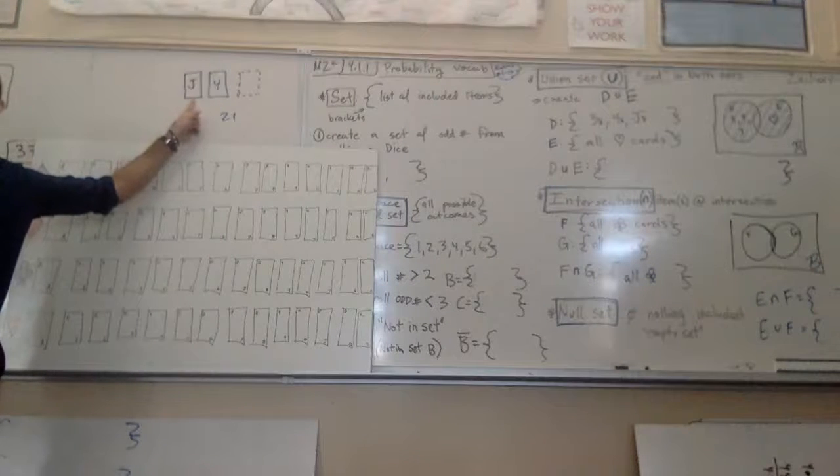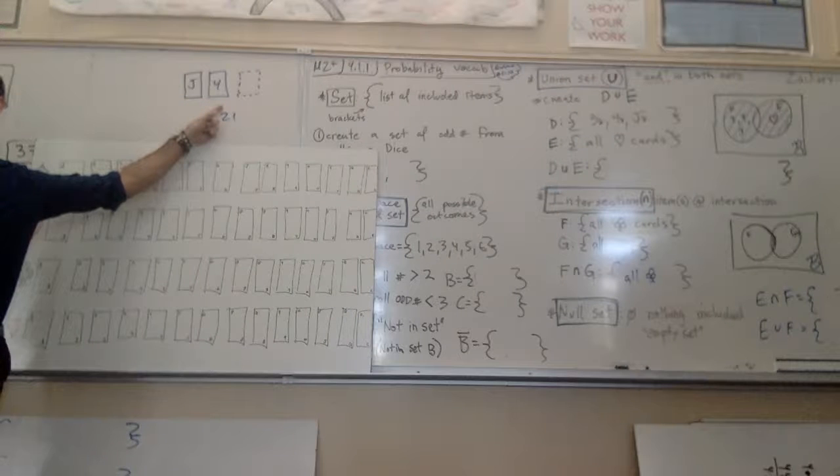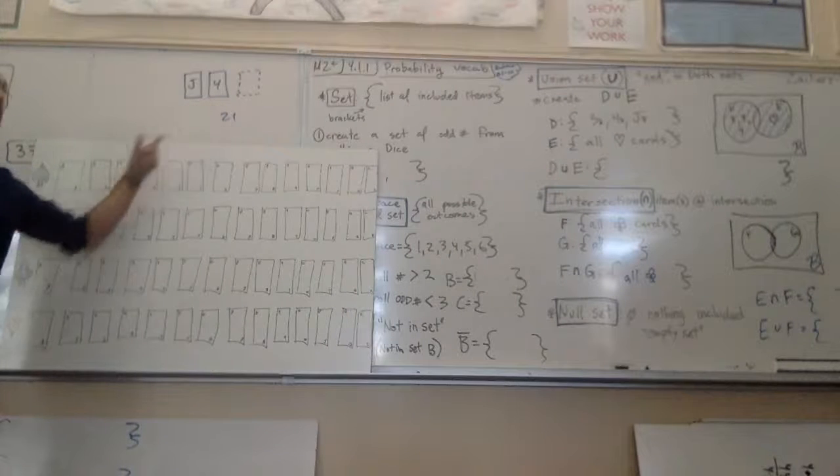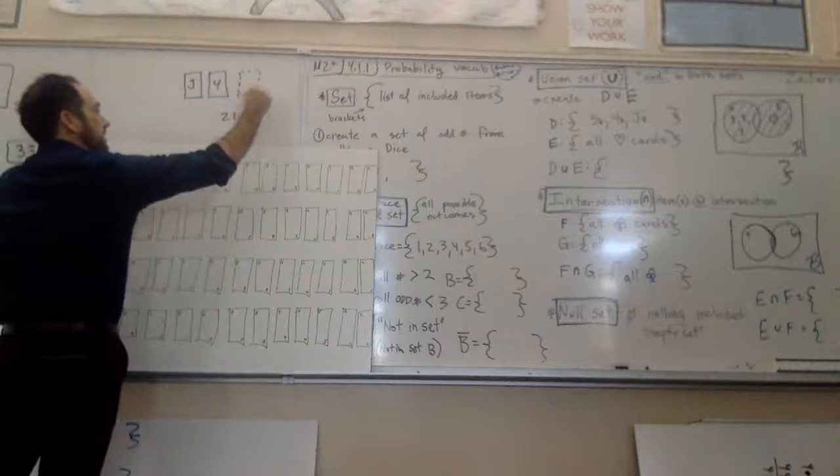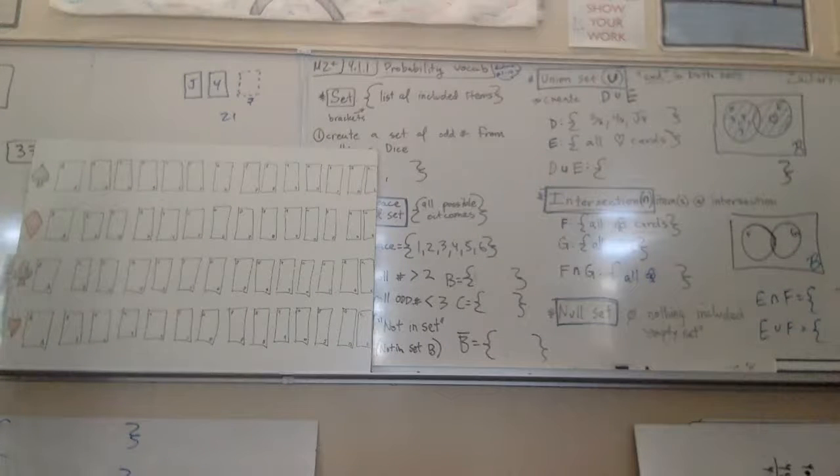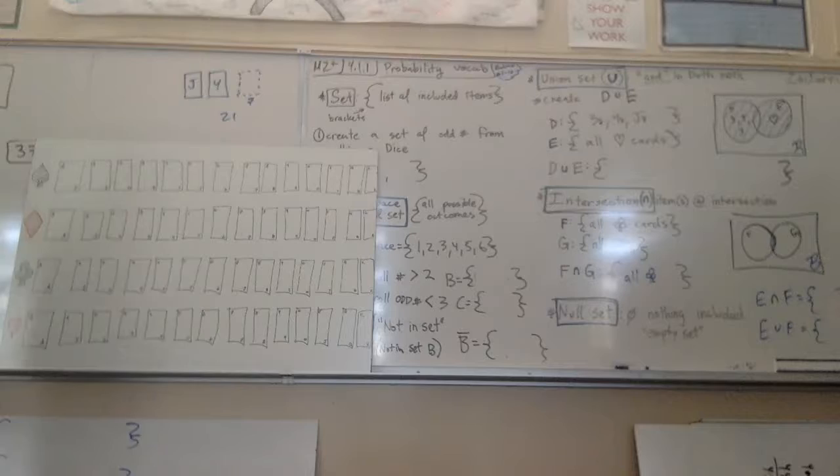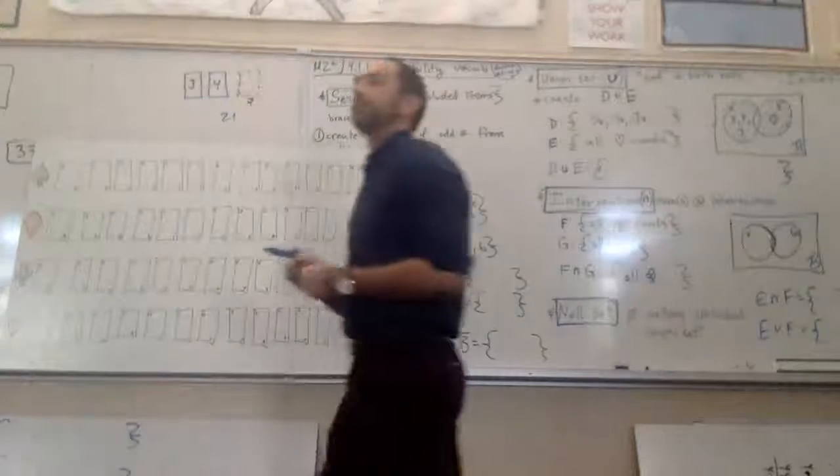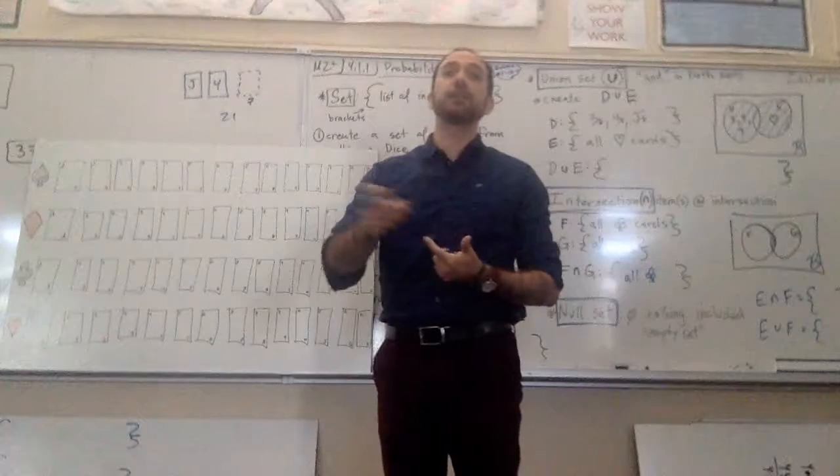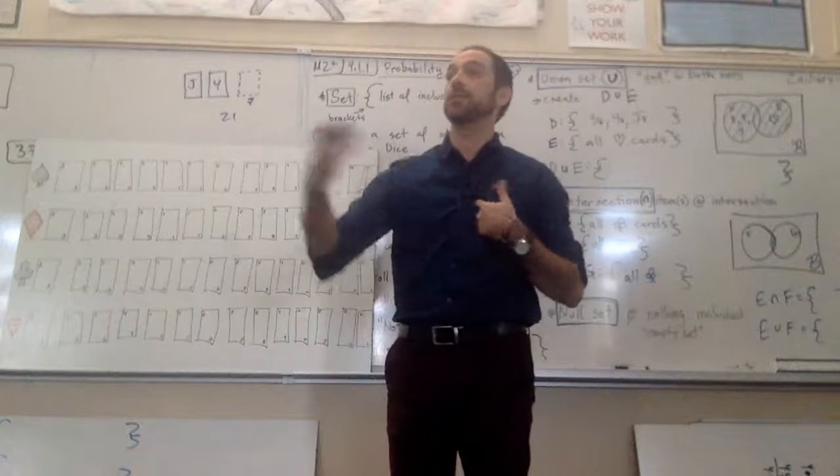Seven. Ten, face cards are ten, plus four is fourteen, so how many more do I need? Seven more. So if I have to get a seven, what is the probability of getting a seven? Let's see, so if it was only me, it's the first deck.